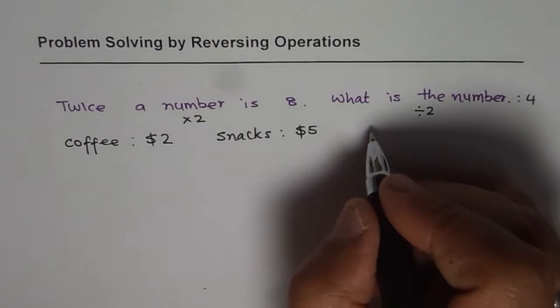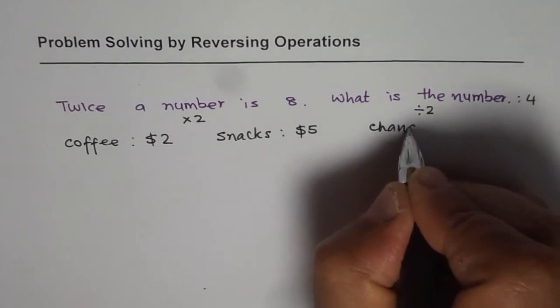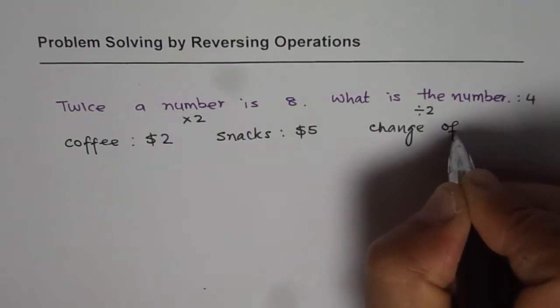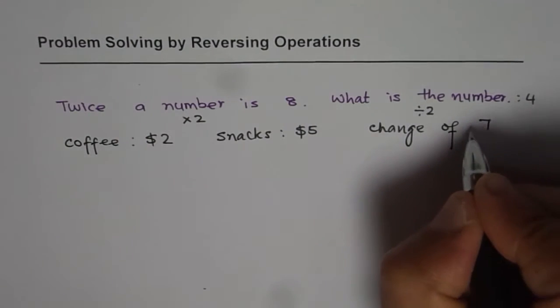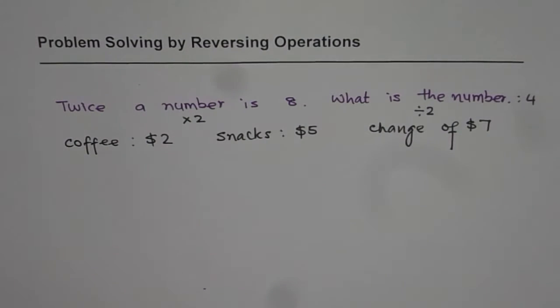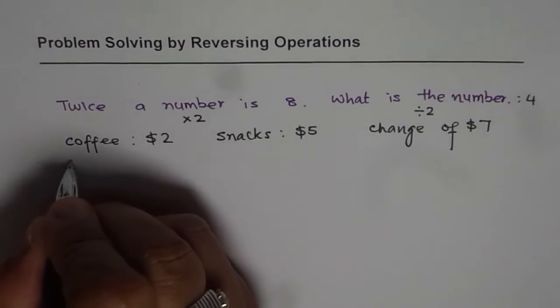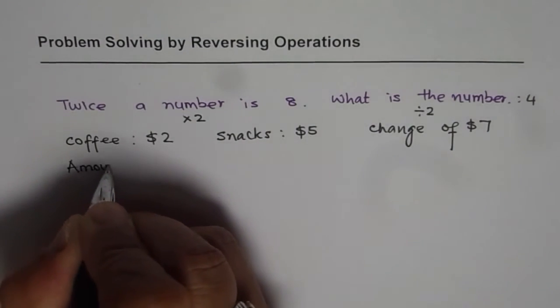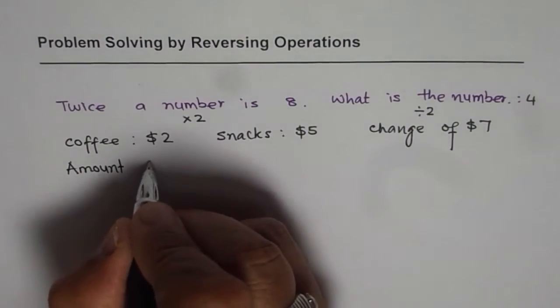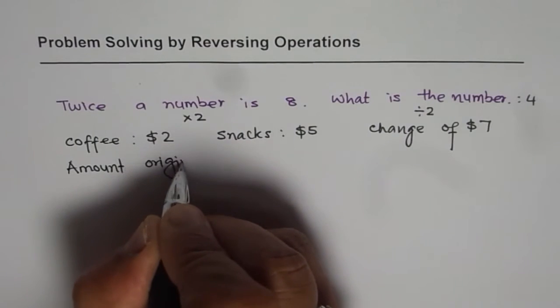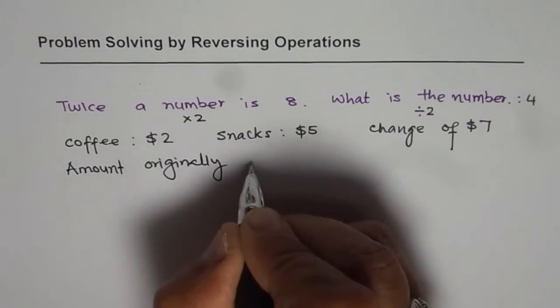And you are left with a change of 7 dollars. Now, the question is, what amount was in your pocket? So, you need to find the amount originally with you.